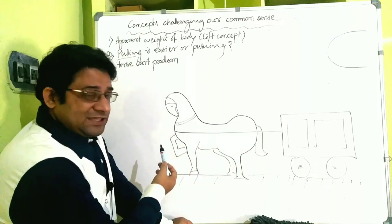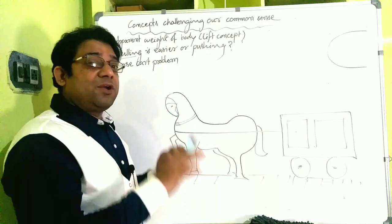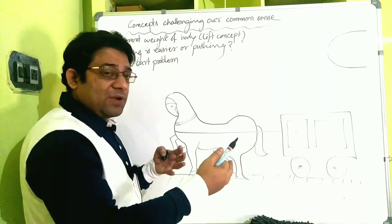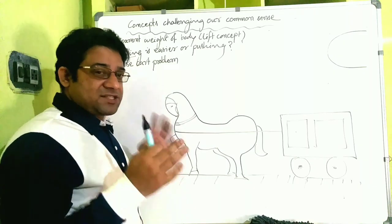So the doubt is: if the horse is pulling the cart and the cart is pulling the horse back, and action and reaction are equal and opposite, if those are equal they should cancel each other. How is the motion being possible? That's the doubt.